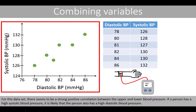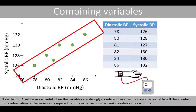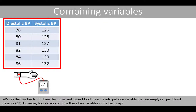For this dataset, there seems to be a strong positive correlation between the upper and lower blood pressure — if a person has a high systolic blood pressure, it is likely they also have a high diastolic blood pressure. Note that PCA will be more useful when the variables are strongly correlated, because the combined variable will then contain more information compared to if the variables show weak correlation. Let's say we like to combine the upper and lower blood pressure into just one variable called blood pressure, BP. But how do we combine these two variables in the best way?